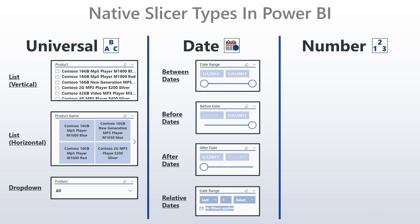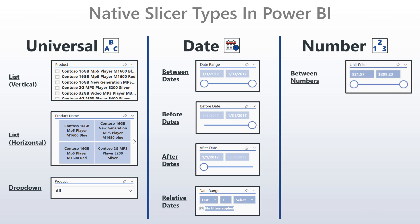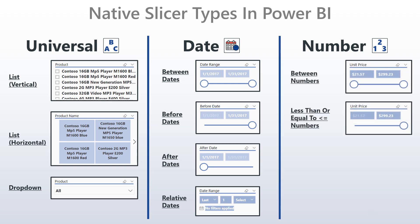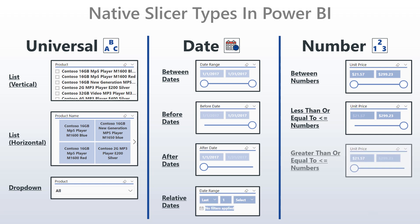Similarly, for number data types, you have a between number slicer, a less than or equal to slicer, and a greater than or equal to slicer. These three function identically to the date range slicers, with the difference being that they are applied to a number rather than a date.